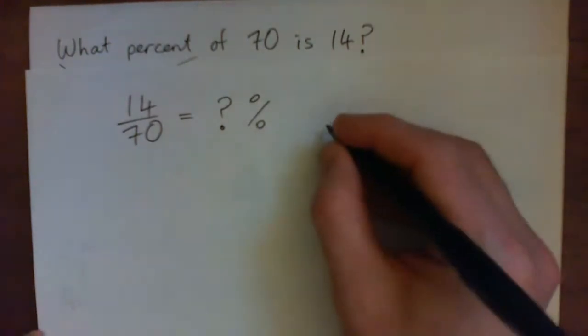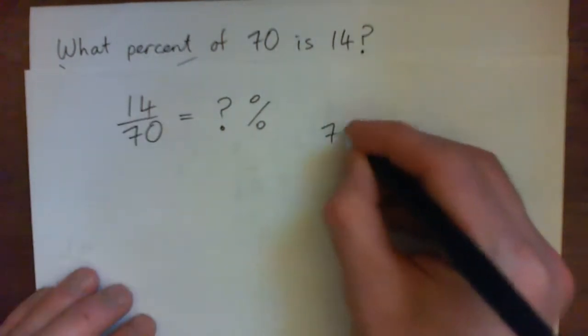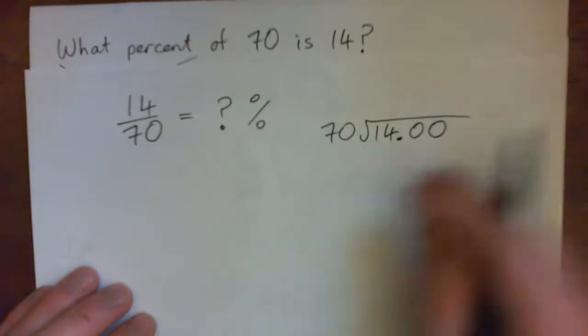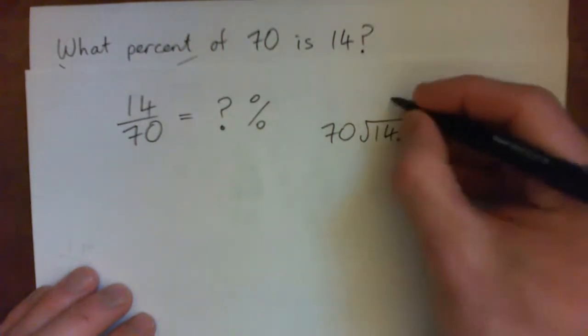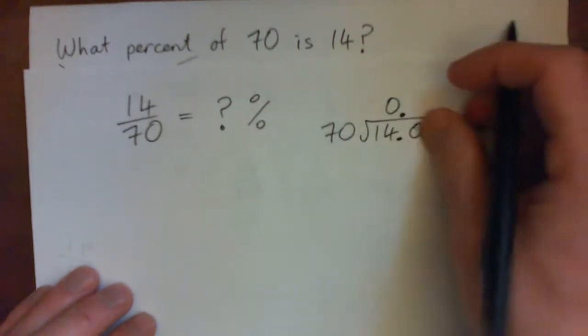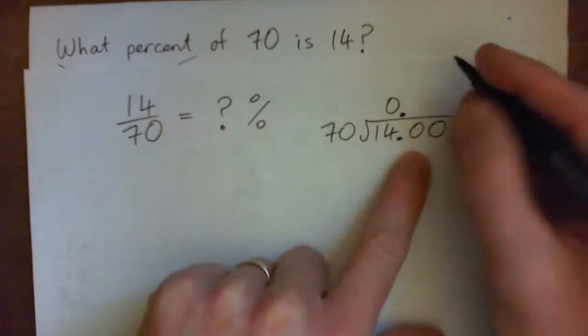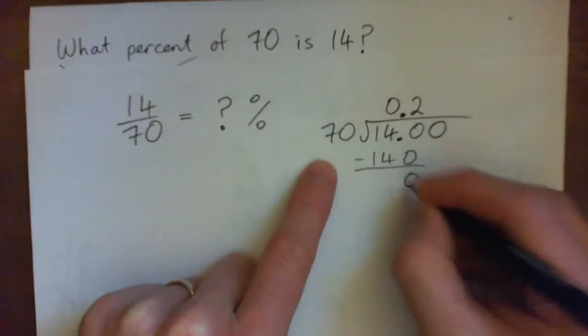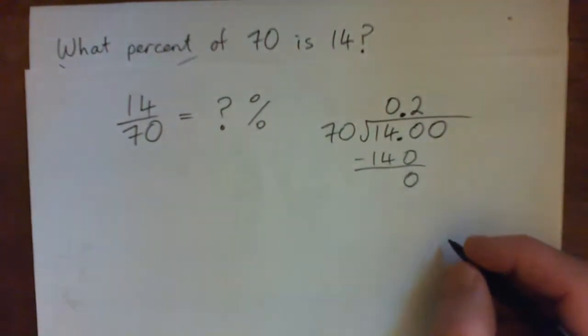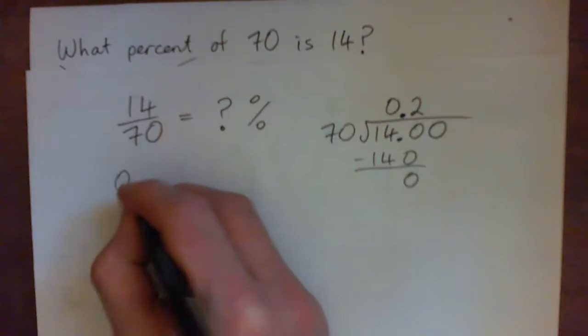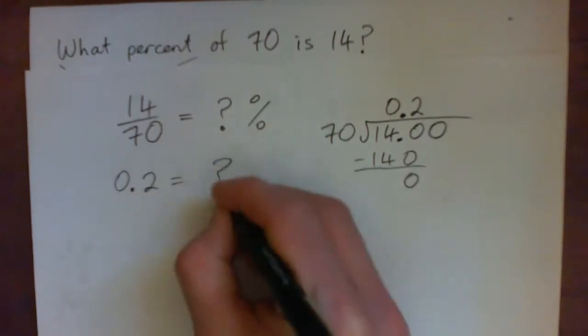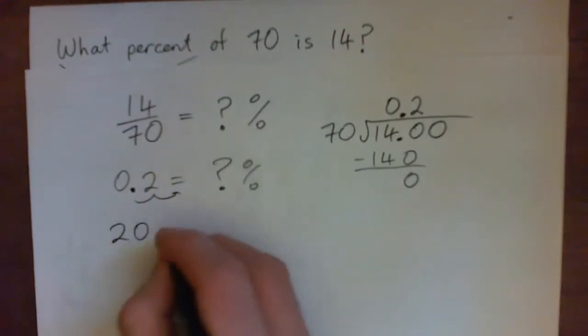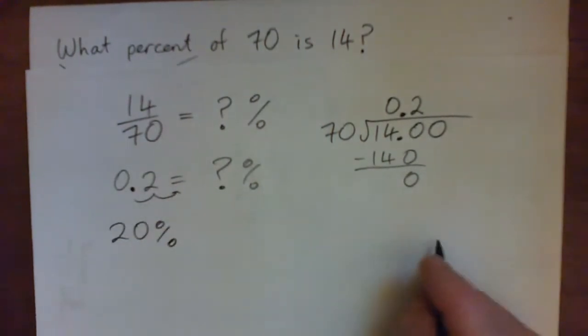You could even, without simplifying this, you could have done a long division. Put 70 into this, 70 into 14 goes 0 times, put the decimal point up. 70 into 140 goes twice. 2 times 70 is 140. Subtract and you get 0 remainder. And so we have 0.2 is what percent. And then we move this decimal point over two spots and you get 20% is the answer.